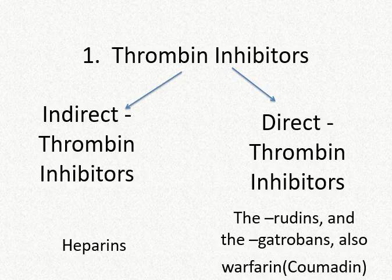The first class of drugs is called thrombin inhibitors. Remember, thrombin is factor 2a. These drugs can be further subdivided into heparin molecules — which are both direct and indirect thrombin inhibitors — as well as the traditional direct thrombin inhibitors: warfarin, the rudins, and the gatrabans.